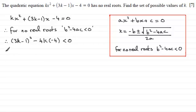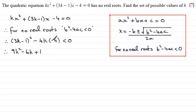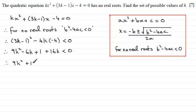If I expand 3k minus 1 all squared — that's 3k minus 1 times another 3k minus 1 — we get 9k squared, then minus 3k and another minus 3k giving minus 6k, and then plus 1. For the other term, minus 4k times minus 4 is plus 16k. So tidying this up, we end up with 9k squared plus 10k plus 1, and this is less than 0.